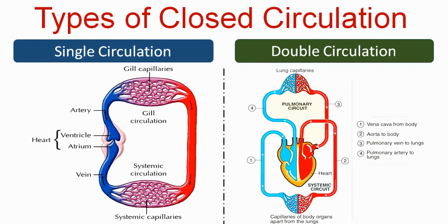There are two circuits — pulmonary circulation and systemic circulation. Blood flows twice through the heart, which is why it is called double circulation. In double circulation, oxygenated and deoxygenated blood are kept separate and never mix, making it a more efficient system.